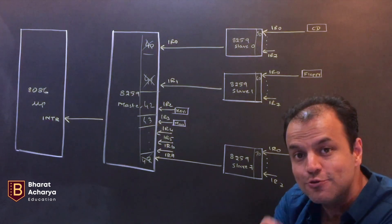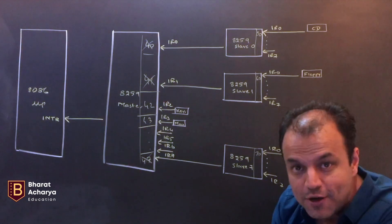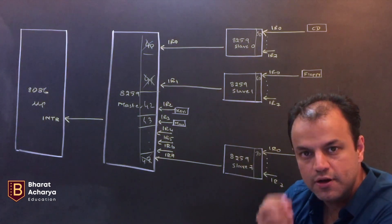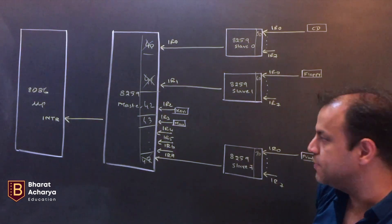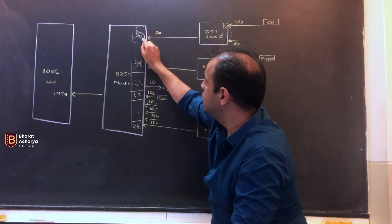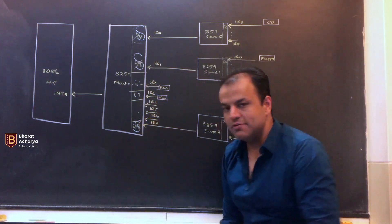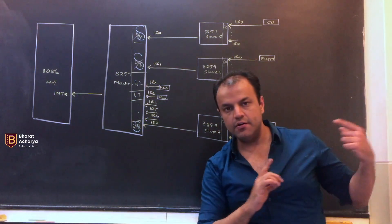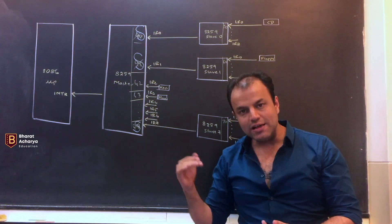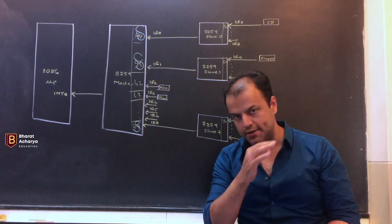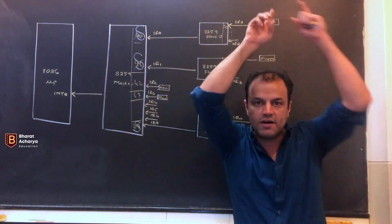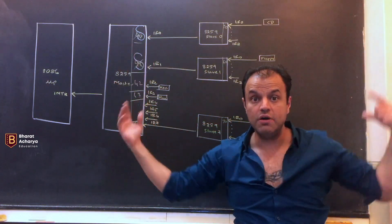That is what we tell to the master during initialization. There are things you need to know before understanding the working. I am still teaching only initialization. During initialization, you inform the master that IR-0, IR-1, and IR-7 have a slave. So if an interrupt occurs on any of these lines, interrupt the CPU. Of course when the CPU asks for the vector number, keep quiet and let the slave give the vector number to the CPU through the data bus. All of them are connected to the data bus of the CPU.